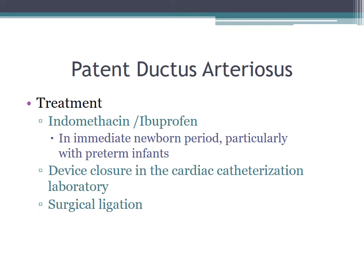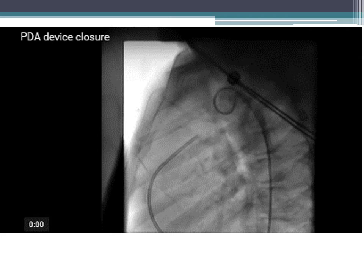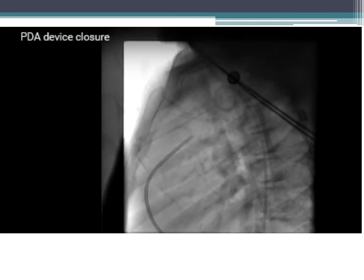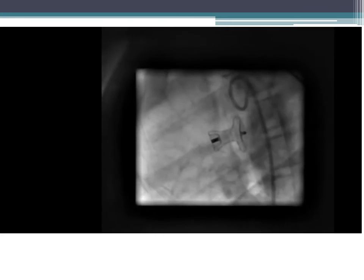Non-surgical PDA closure is the gold standard in most centers. Treatment with indomethacin or ibuprofen works particularly well in the immediate newborn period and with preterm infants. Device closure in the cardiac catheterization laboratory is first-line, though surgical ligation is also an option. On angiogram, a lateral injection into the MPA shows the conical PDA, and after device closure, no flow is seen through the device.